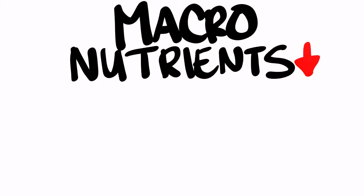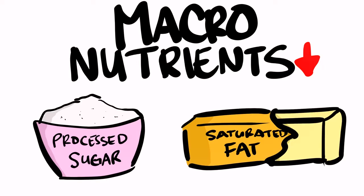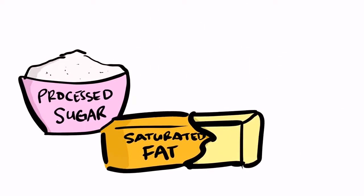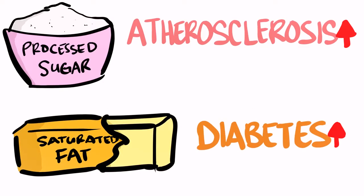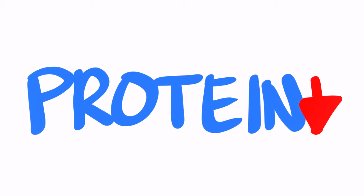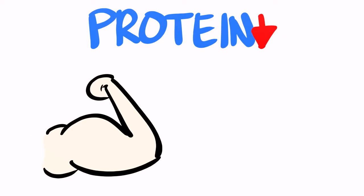In terms of macros, junk food consists of heavy amounts of processed sugar and saturated fat. Two things of which, when consumed chronically or in excess, has been connected to health diseases such as atherosclerosis and type 2 diabetes. It's also missing an abundance of protein, the number one macronutrient needed to build any considerable amount of muscle when paired with training.